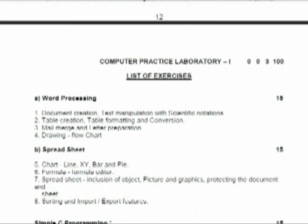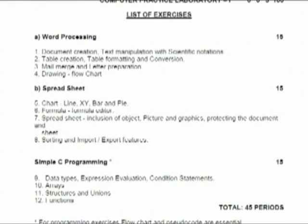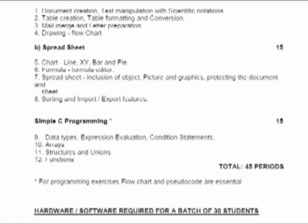For the laboratory, there are three sections. In the first section, students study word processing tools. The second section covers spreadsheets, which they work on in the lab. In the third section, they try simple C programming — not anything tedious, just simple C programs.